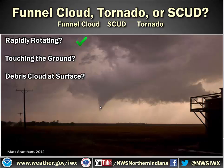Is it touching the ground in this case? Unfortunately, we can't see if there's any debris in this picture. It doesn't look like it's touching the ground at all, so we'll say no. Is there a debris cloud at the surface? I don't see one there. So in this case, since it's not touching the ground but it is rapidly rotating, we would say it's a funnel cloud.